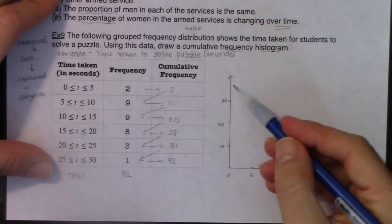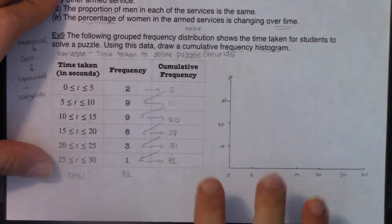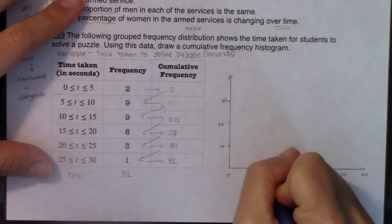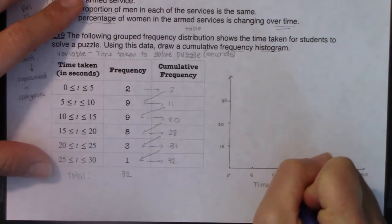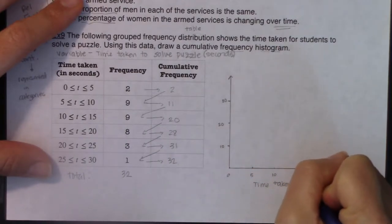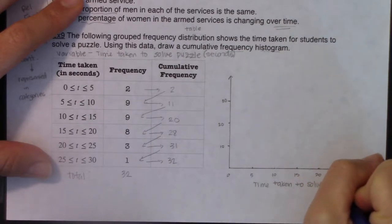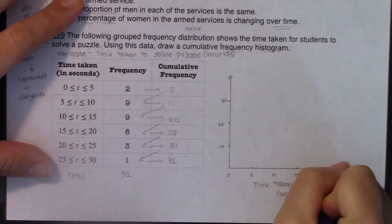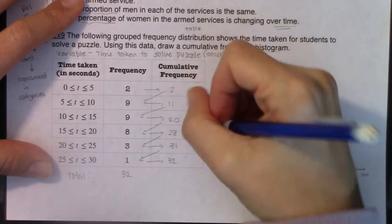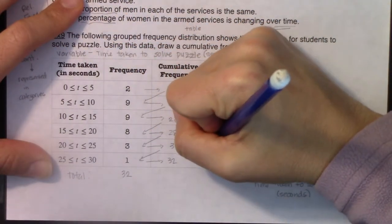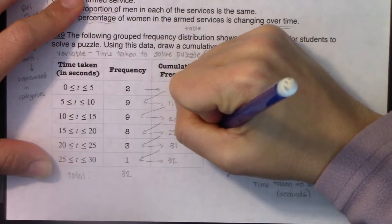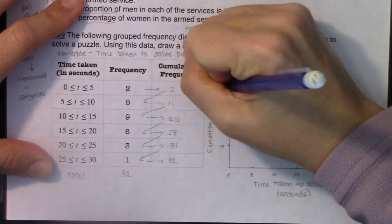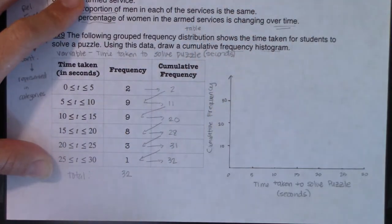Now for my y axis, I want to put cumulative frequencies here. I need to go at least as high as 32. So I think I'll go by fives again. I do run out of room. So I'm actually going to go by 10s. 10, 20, 30. So I was going to go by fives, but I was running out of room for the space I had.